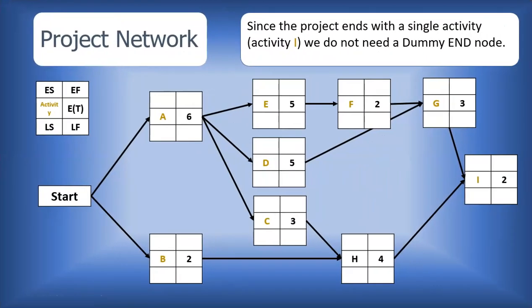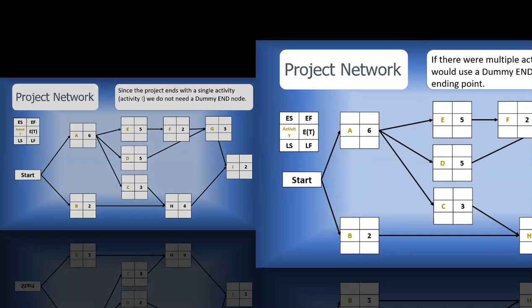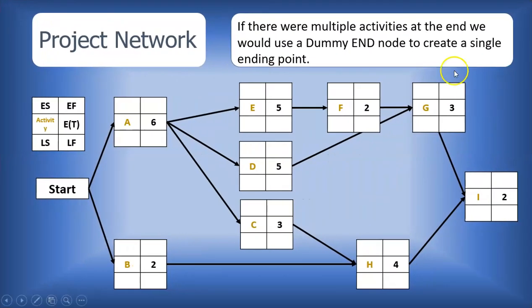Now, since the project is ending at a single point, which is activity I, we do not need a dummy end node. The dummy end node is only needed when we do not have that single ending point. If we had multiple activities at the end instead of this single ending point, then we would have needed to create a dummy end node for all the activities to culminate at that dummy end node. But in this case, all activities culminate on activity I.